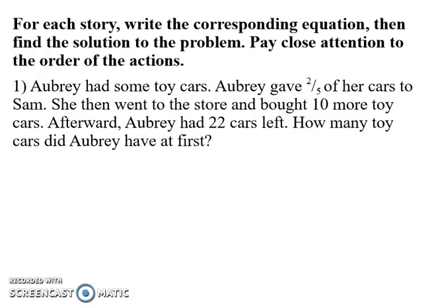So let's now move on to Aubrey and look at her situation. Aubrey has some toy cars, which we'll just call C. That's where we started. Then Aubrey gave two-fifths of her cars to Sam. So she's now gone from having C to having C minus two-fifths C.